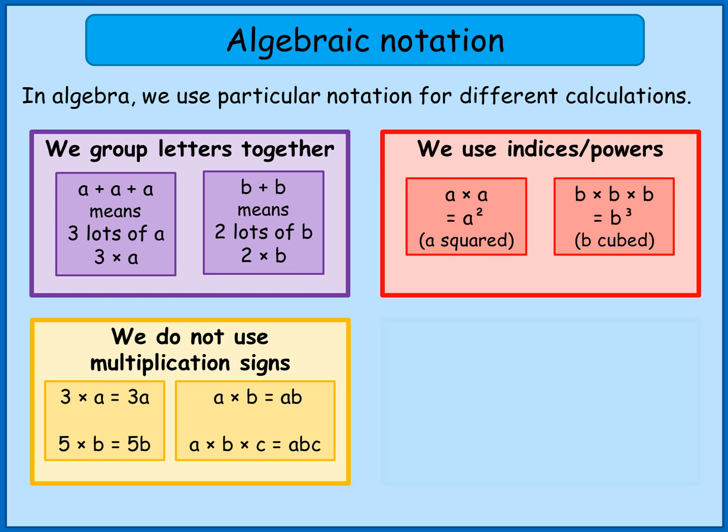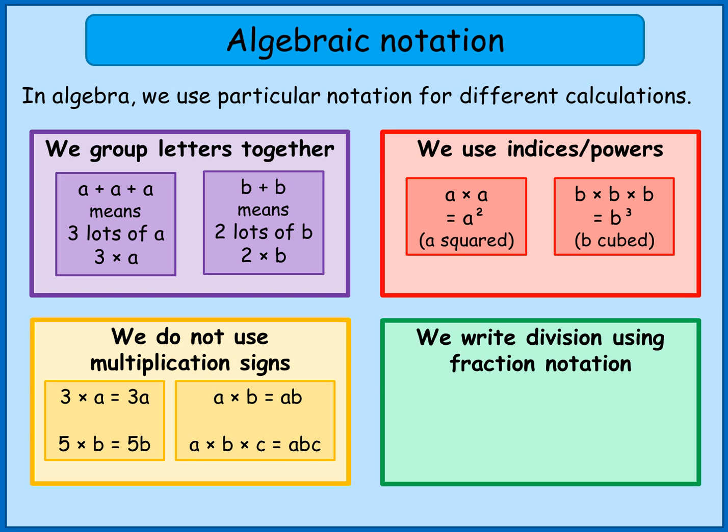The final thing we tend to do is to write division using fraction notation. We can think of a half of something as being the same as divided by 2. Rather than write divided by 2—like a divided by 2—we use fraction notation, so we'd write a over 2, or I could write a half a. These both mean exactly the same thing.